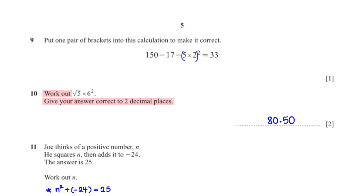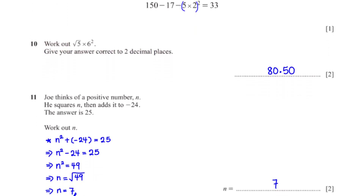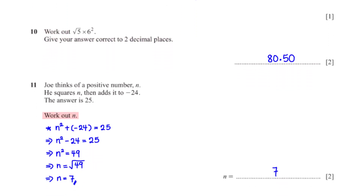Work out √(5 × 6²). Give your answer correct to two decimal places. When we type this into the calculator we get 80.50 rounded to two decimal places.